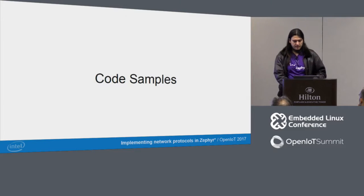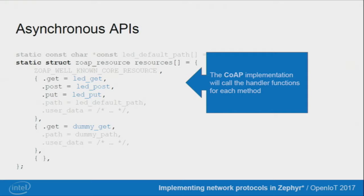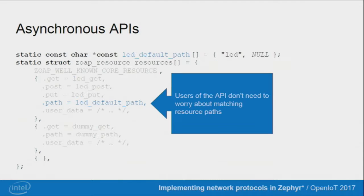Here are some code samples — I cherry-picked two since we don't have much time. This is how you define your CoAP endpoints. For instance, ledget, ledpost, and put are called whenever those methods — GET, POST, or PUT — are called on that particular endpoint. The path is defined as an array of strings, and all path matching is done inside the CoAP library so you don't have to worry about that. Pretty simple, and it makes things a lot easier to work with.